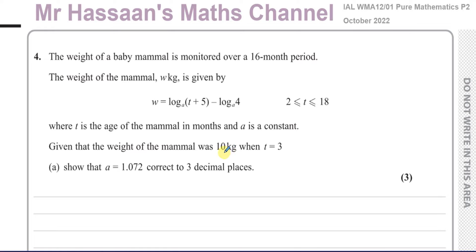Given that the weight of the mammal was 10 kilograms when t equals 3, show that a equals 1.072, correct to 3 decimal places. Okay, so they're telling us that when w is equal to 10, t is equal to 3.